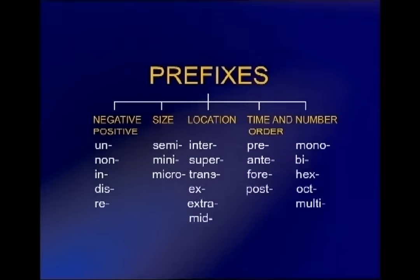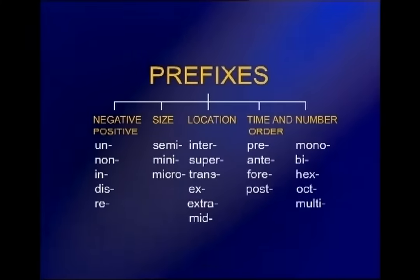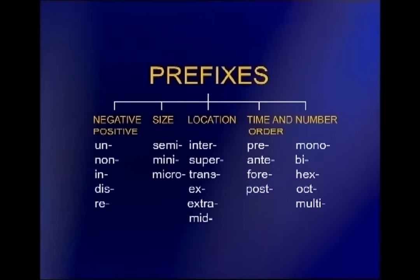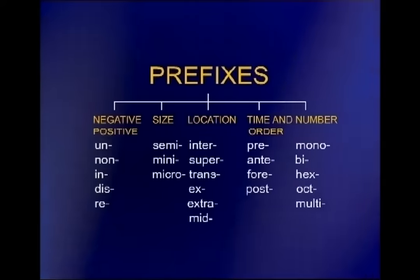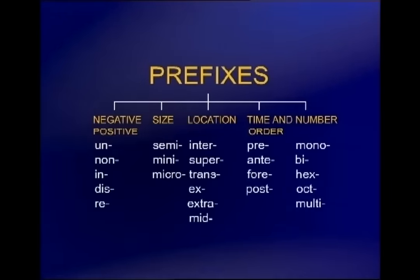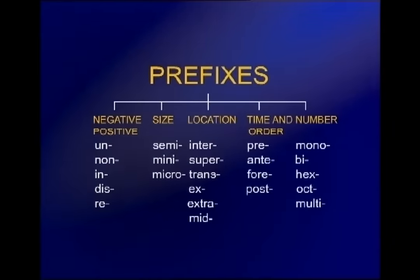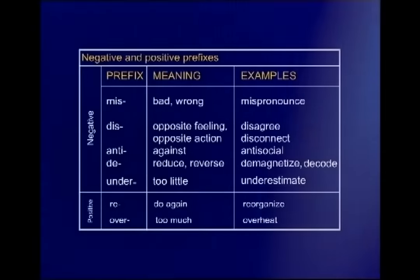For prefixes of number, you have mono, bi, hex, oct, and multi. Some of these prefixes are negative in meaning — un, in, im, ill, ir, non — all prefixes we have gone through. You will see that some are not negative but positive.